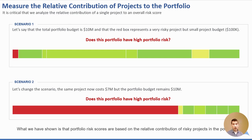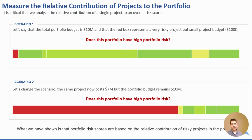It's important to measure the relative contribution of your project risk compared to the portfolio. In scenario one, there's a small $100,000 project — really high risk — and the rest of the portfolio is low risk. Does the portfolio have high risk? The answer is no. Even though there's a high-risk project, the overall portfolio would have a low risk profile. But in scenario two, if that project were instead a $7 million project against a $10 million portfolio budget, the majority of the portfolio budget is for that one high-risk project — and now the portfolio does in fact have high risk.